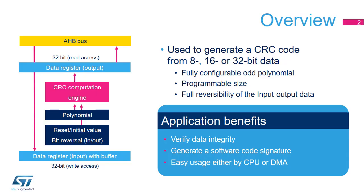CRC stands for Cyclic Redundancy Check. The CRC calculation unit is used to generate a CRC code on 8, 16, or 32 bits of data using a configurable polynomial value and size. The CRC-based techniques can be used to verify data transmission or storage integrity. The CRC calculation can also be used to compute the signature of the application software during run time, to be compared with a reference signature generated at link time and stored at a given memory location.